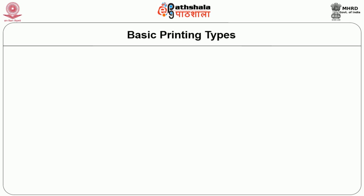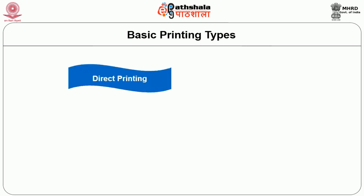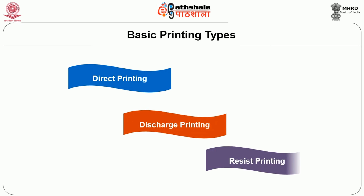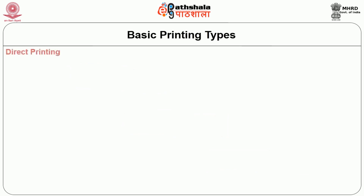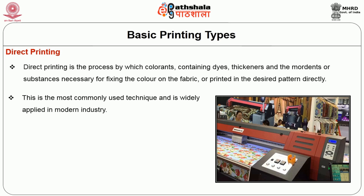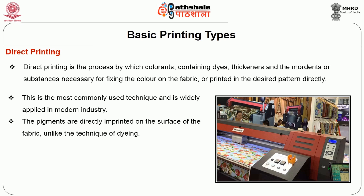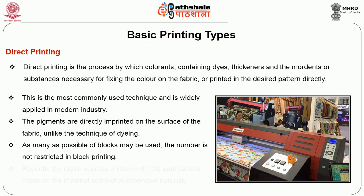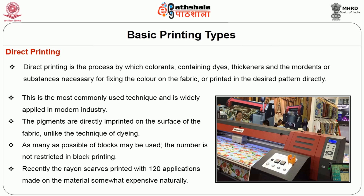The basic printing types are divided into three major groups: direct printing, discharge printing, and resist printing. Direct printing is a process by which colorants containing dyes, thickeners, and mordants — substances necessary for fixing the color — are printed in the desired pattern directly on the fabric. This is the most commonly used technique, widely applied in modern industry. Pigment or blocks may be used, with no restriction on the number in block printing.